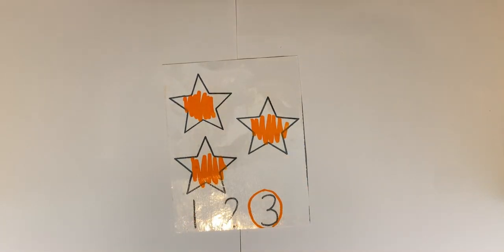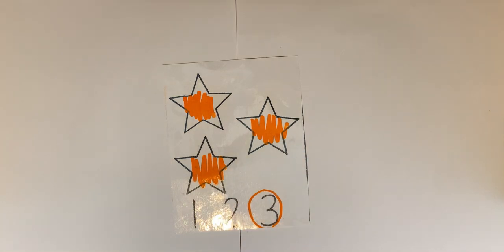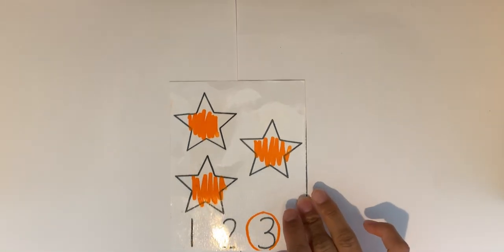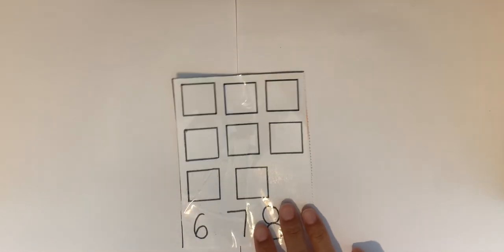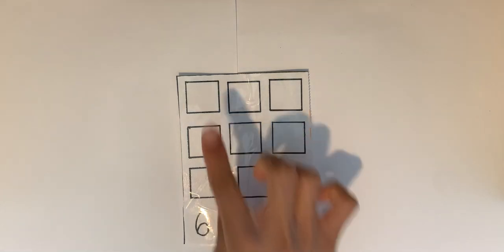There are one, two, three stars. Great. Our next shape is square.